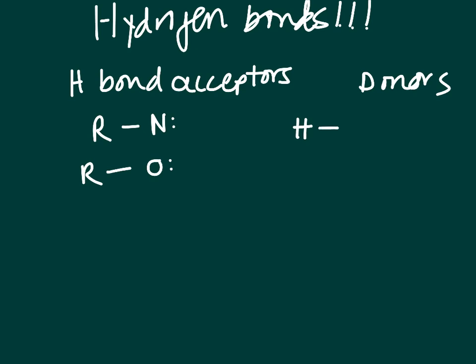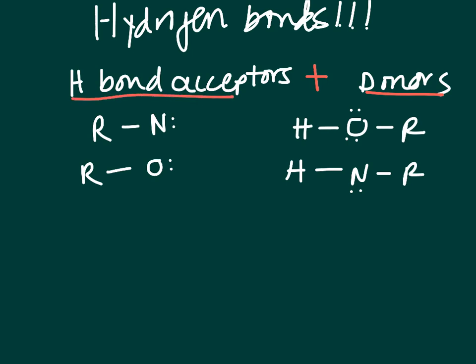H-bond donors have hydrogens on them but very specifically: a hydrogen attached to an oxygen, or a hydrogen attached to a nitrogen. Notice there are no carbon atoms here at all. So if one functional group has a nitrogen or oxygen with a lone pair — that's the acceptor — and the other has an H attached to O or N — that's the donor — you have a hydrogen bond. You need both: one donor and one acceptor.